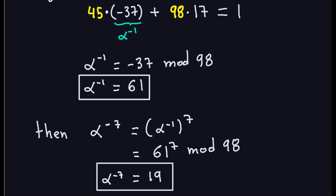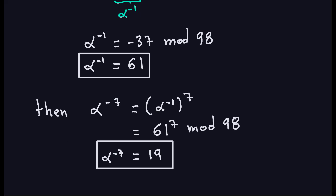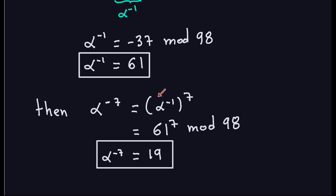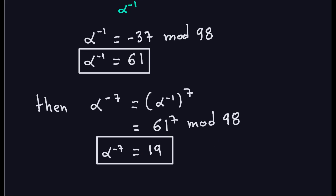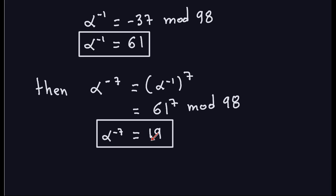Now we compute alpha^(-7) = (alpha^{-1})^7 = 61^7 mod 98. Carrying out that computation gives 19. So alpha to the negative m equals 19. These computations are easier to handle with a computer or calculator.